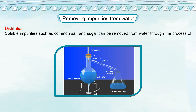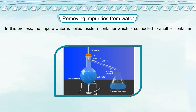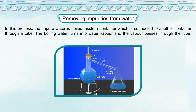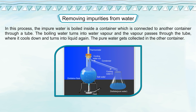Distillation: soluble impurities such as common salt and sugar can be removed from water through the process of distillation. In this process, the impure water is boiled inside a container which is connected to another container through a tube. The boiling water turns into water vapor, and the vapor passes through the tube where it cools down and turns into liquid again. The pure water gets collected in the other container.